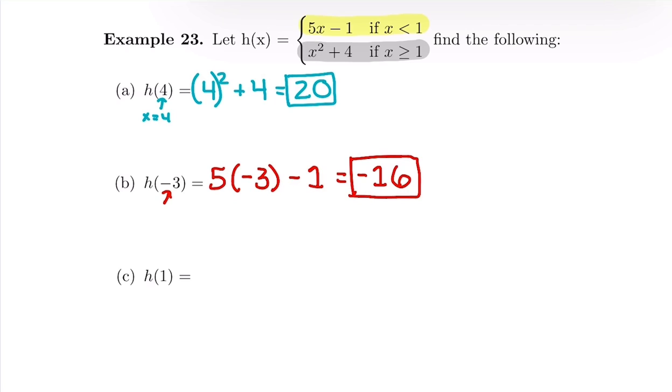Now for our last one, we have x equals 1. We want to figure out which piece to plug it into. We'll plug into the top piece as long as x is strictly less than 1. Is 1 less than 1? No. So we're going to look at the bottom piece where we plug in as long as x is bigger than or equal to 1. Since it's equal to 1, we'll plug into that bottom piece: 1 squared plus 4, which gives us 5.